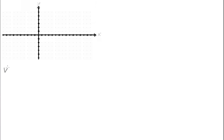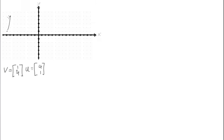Say we have two vectors in R2. Let's say vector v is [1, 4] and our other vector u is [4, 1]. If we want to draw these two vectors, vector v would look like this and vector u would look like this.